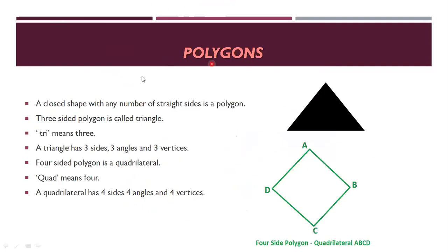Next is polygons. A closed shape with any number of straight sides is a polygon. It should be a closed figure with straight sides. A three-sided polygon is called a triangle — tri means three. You can see one side from here to here, another side, and a third side.